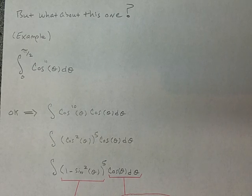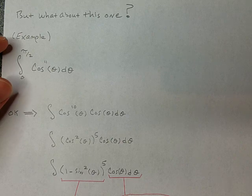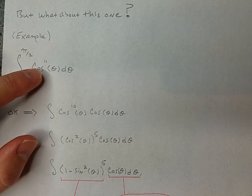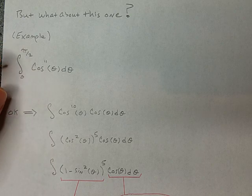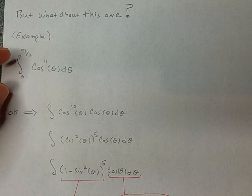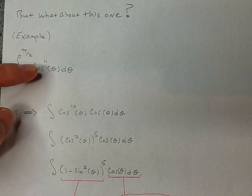Okay buddy, so my intention in this video is to talk about how you could do a definite integral like this that has a higher power of cosine or sine. So like this one, bounds of integration 0 to pi over 2, and then it's cosine to the 11th power.